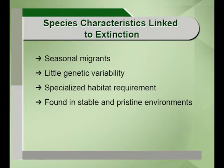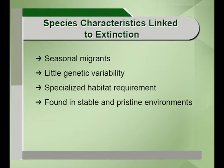Then there are seasonal migrants. Seasonal migrants require two different types of habitat for their survival. If any of those habitats is destroyed, their entire life cycle will be disturbed, their migration routes and breeding habits will change, and it will be difficult for them to survive. For example, if a dam is constructed, a fence is built, or one habitat is completely destroyed, these migrants will be prone to extinction. Then, species with little genetic variability: species with high genetic variability can adapt to changing environments, but species with a smaller genetic base are more prone to extinction.